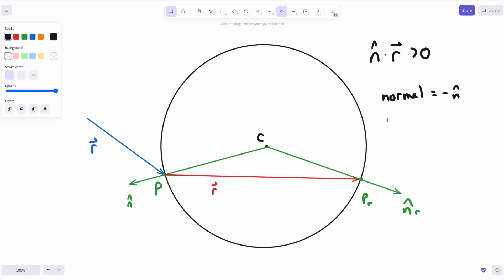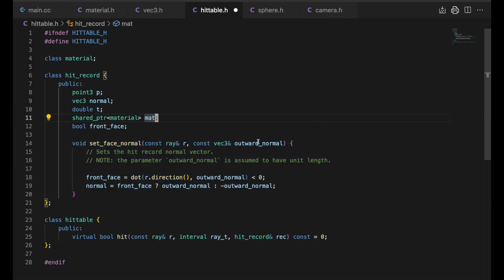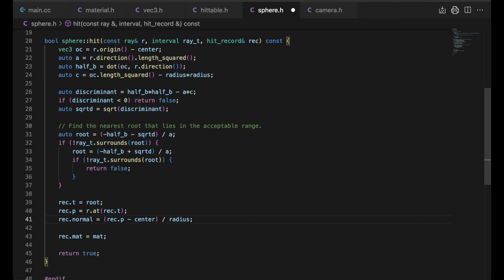We'll introduce a new property for a hit, the front face, to store this information. For the blue ray, it is true, and for the red one, false. If it's false, we will invert the normal. We can now correctly calculate the refracted ray. We'll add the front face property to the hit record, and set it and the normal by calling this setFaceNormal function. We'll take the outward normal, and call setFaceNormal here.